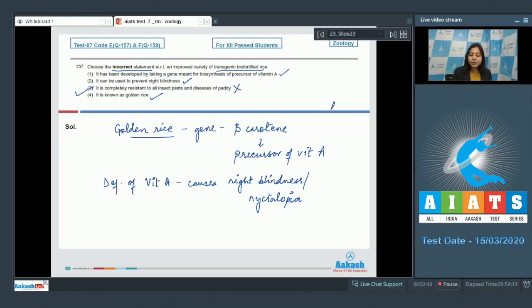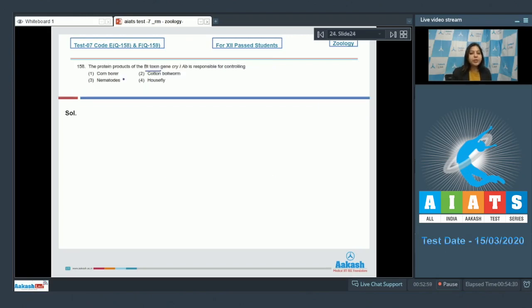So the correct answer becomes option number three. Moving ahead, next question, question 158: The protein products of the BT toxin gene cry 1 AB is responsible for controlling number one corn borer, number two cotton boll worm, number three nematodes, number four house fly.